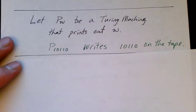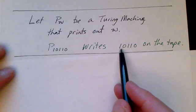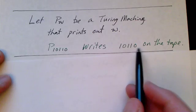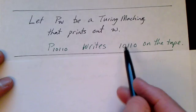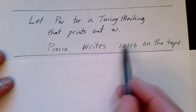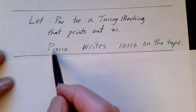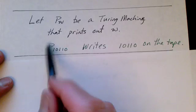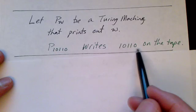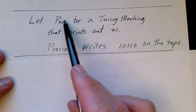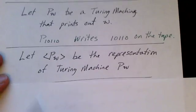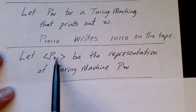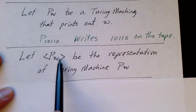Before we go any further, let's imagine we have a simple string of ones and zeros — one zero one one zero, for example. We can imagine a Turing machine that would do nothing more than output this string onto the tape. We can call that Turing machine P sub W, where the subscript is the string. So P sub W is a Turing machine that prints out on the tape the string W. That Turing machine P sub W has a representation, which we'll use angle brackets to indicate, as we have in the past.